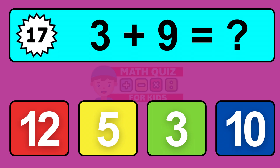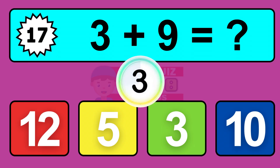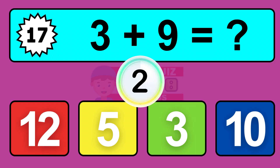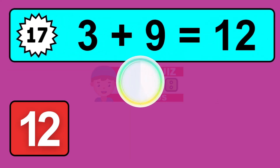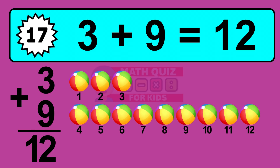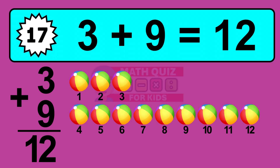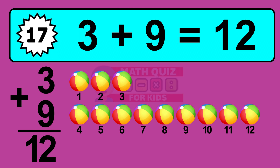Question 17. 3 plus 9 equals what? The answer is 3 plus 9 is 12. Let's count it: 1, 2, 3, 4, 5, 6, 7, 8, 9, 10, 11, 12.